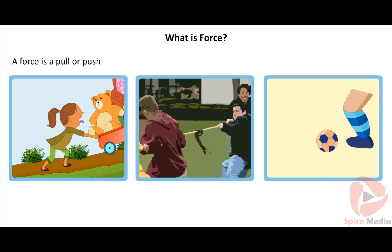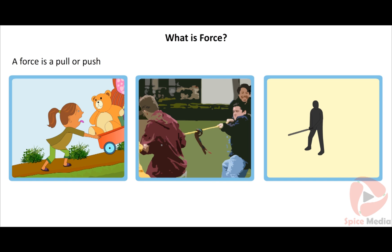A ball will remain in place till it is kicked off with a great force. So we can say that force is an influence which tends to set a stationary body in motion. This kicked off ball will remain in motion till it is hit by a bat which changes the direction of motion of the ball. Thus, force also tends to change the speed and direction of a moving body.